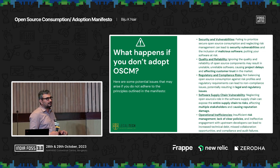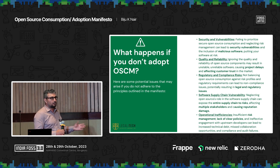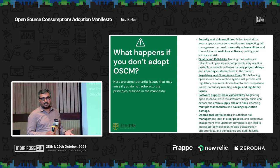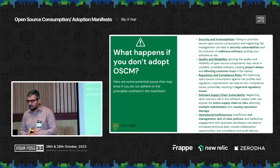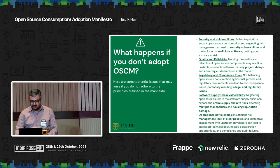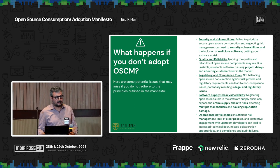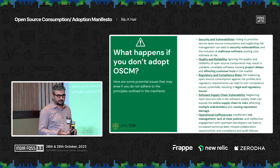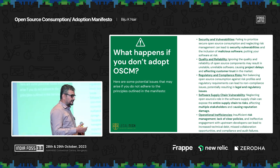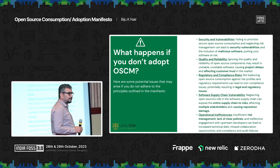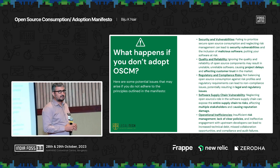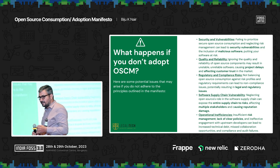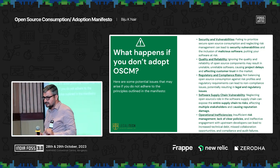If we don't do proper adoption, the problems are: it might be a security vulnerability issue, it could affect quality and reliability, and it could affect your reputation as a project. For example, the company Equifax used Apache Struts, and there was a vulnerability in Apache Struts. A patch was provided by the Apache Foundation, but Equifax did not fix the patch.